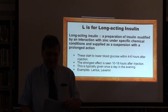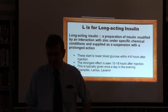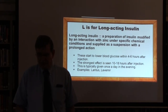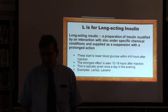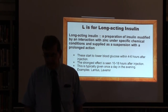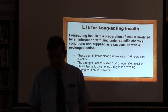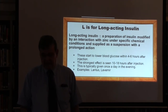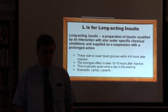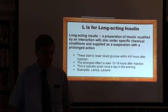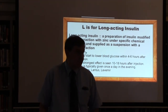L is for long-acting insulin. Long-acting insulin is a type of insulin that starts to lower blood glucose within 4 to 6 hours after an injection and has its strongest effect 10 to 18 hours after injection. These insulins are typically given once a day. Examples include Lantus and Levemir. There are also short-acting or rapid-acting insulins such as Novolog, Humalog, or Apidra that are typically given before meals. These insulins start to work right away and are used to cover the carbohydrates eaten in the meal.